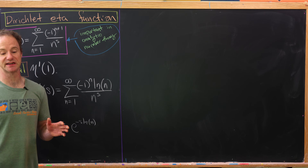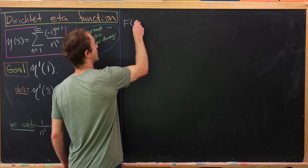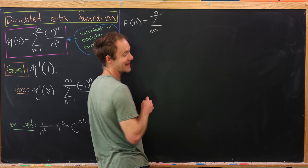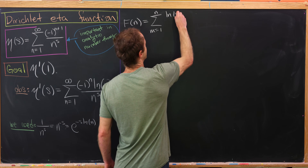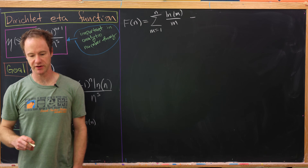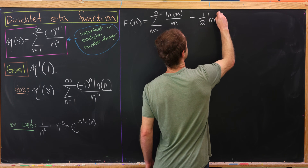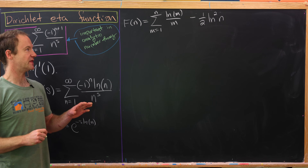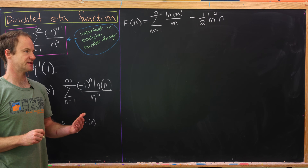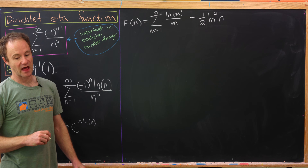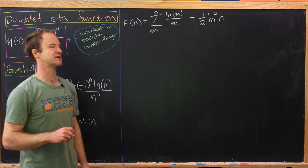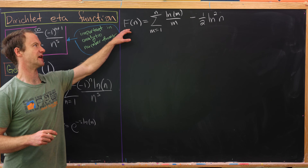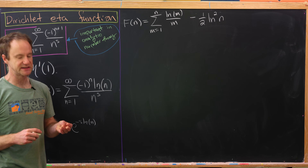We're going to do this with a pretty interesting sequence. Let's define f of n as the sum as m goes from 1 to n of the natural log of m over m, minus 1 half the natural log of n squared. First, we'll prove that this converges by using something called the Cauchy integral test. We'll look at a continuous function version of this — whereas f of n is like a discrete function.